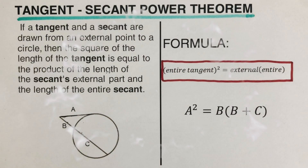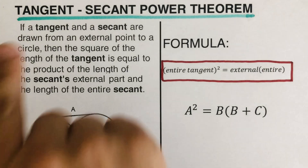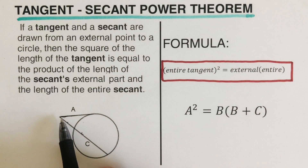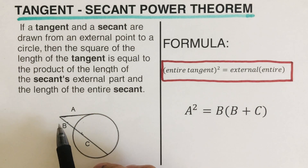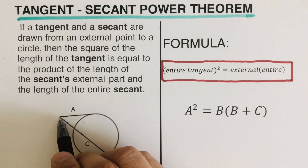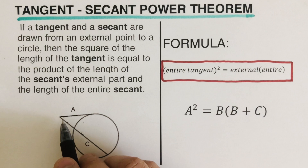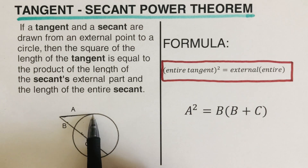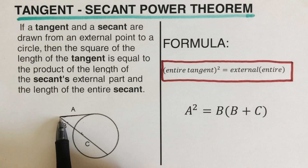In this video we are going to determine the missing side length of either a tangent or a secant using the tangent-secant power theorem. We have a picture here showing a tangent labeled as 'a' — that's the length of the tangent. Both the tangent and secant intersect at a point external or outside the circle. A tangent touches only one point of the circle, while a secant touches the circle twice.